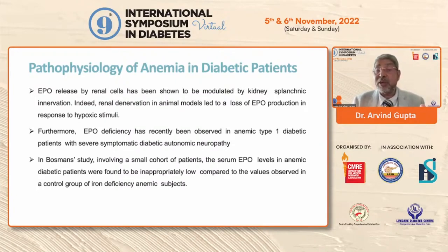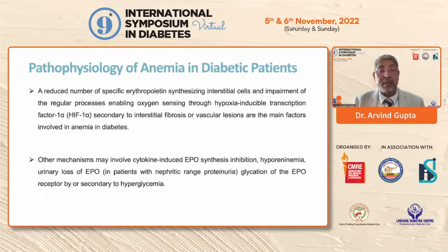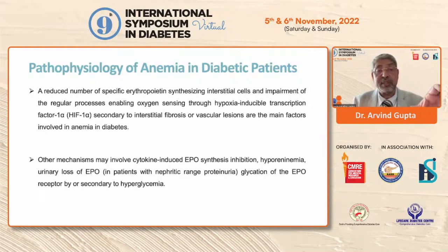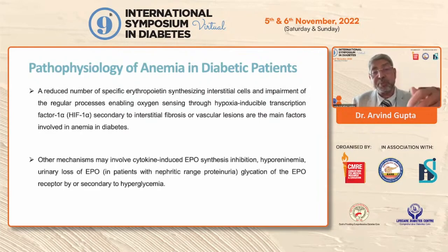EPO deficiency has recently been observed in anemic type 1 diabetes patients with severely symptomatic diabetic autonomic neuropathy. In Bosman's study involving a small cohort, serum EPO levels in anemic diabetic patients were found to be inappropriately low compared to control values. There is a reduced number of erythropoietin-synthesizing interstitial cells and impairment of oxygen sensing through the hypoxic inducible transcription factor HIF1-alpha, secondary to interstitial fibrosis or vascular lesions — these are the main factors involved in anemia.